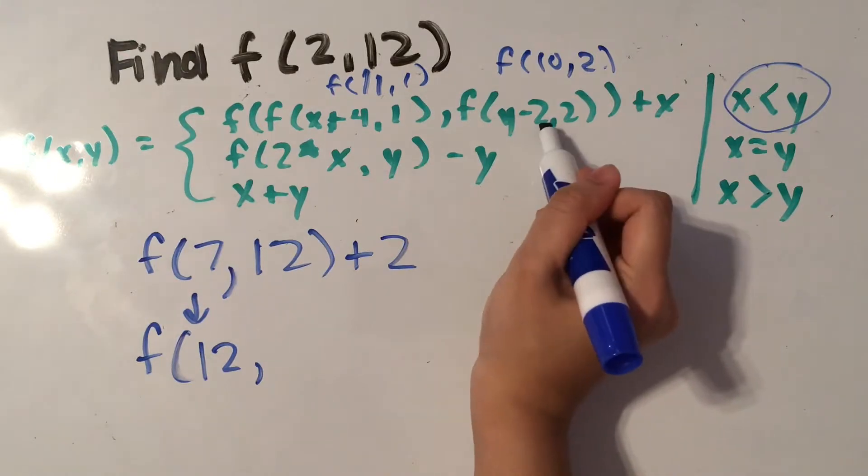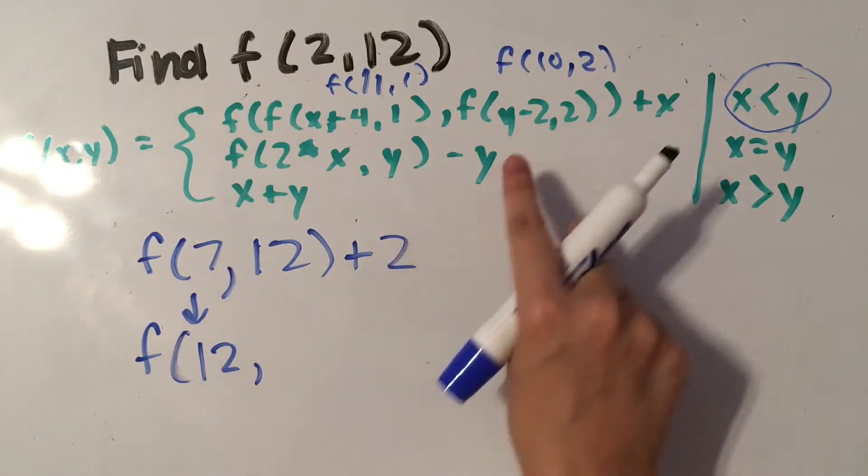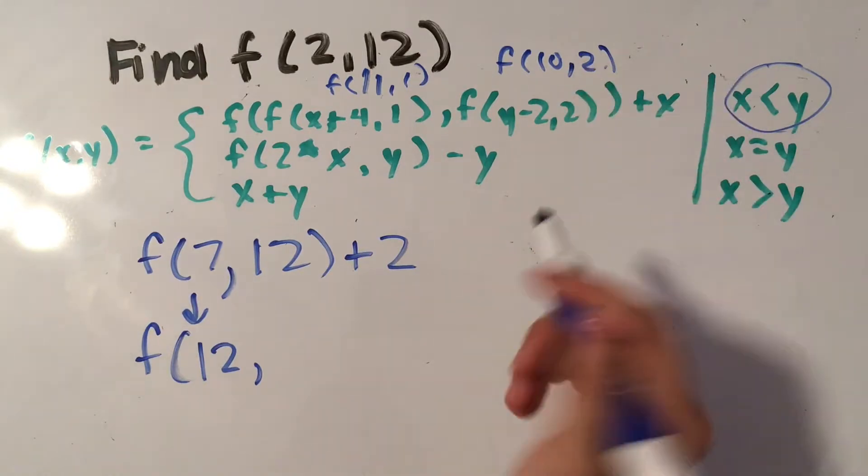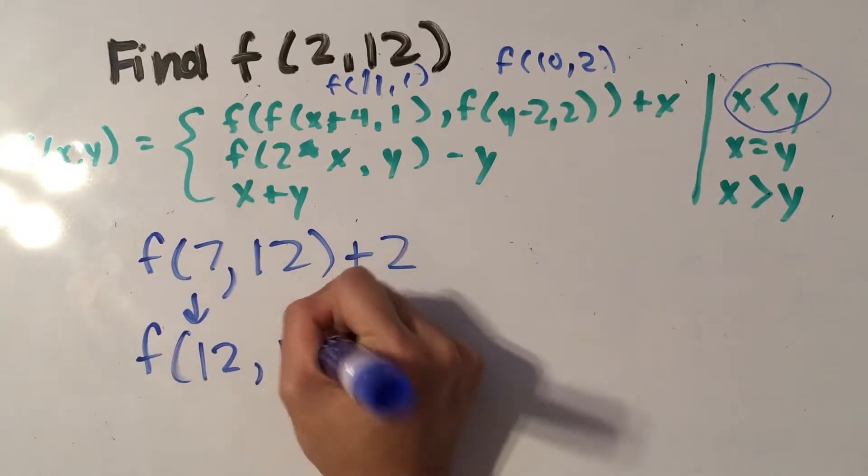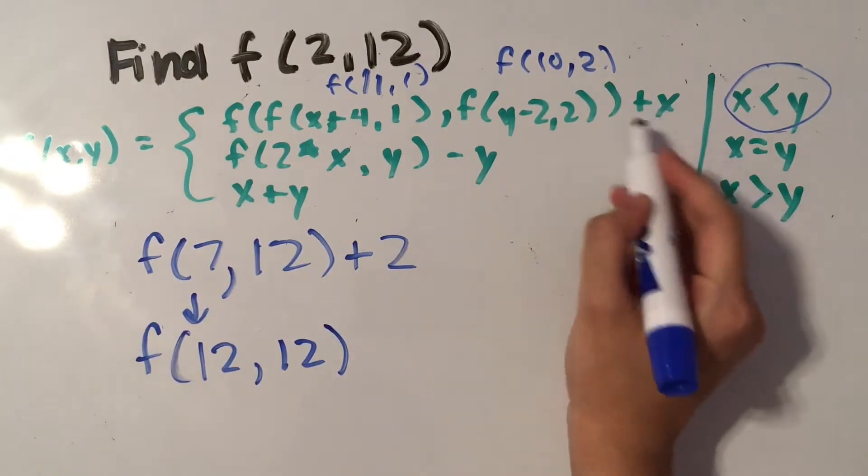And then we have f of y minus 2, so 12 minus 2 is 10 again comma 2, so that's going to be the same thing. So we're going to get 12 there plus x which is 7.